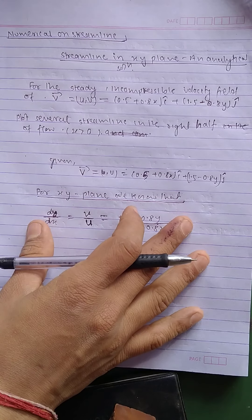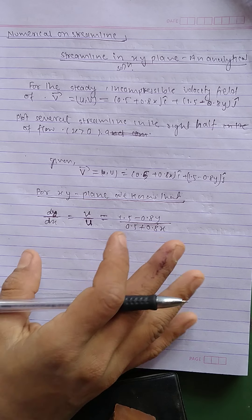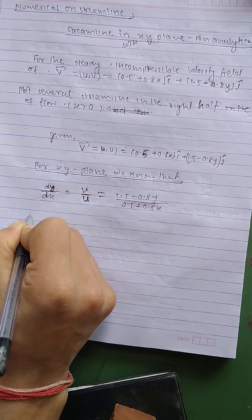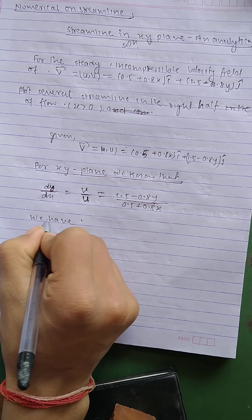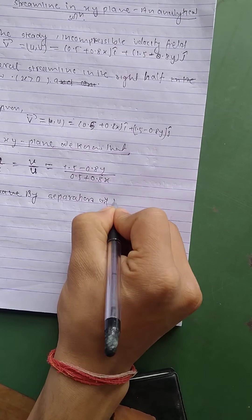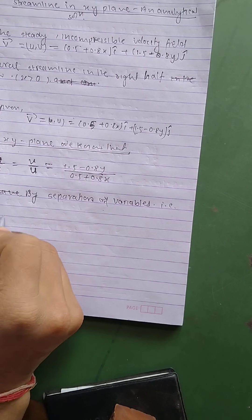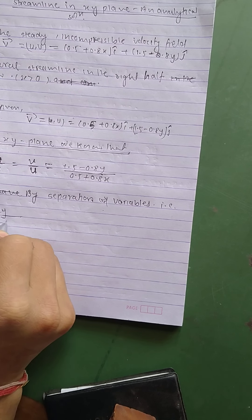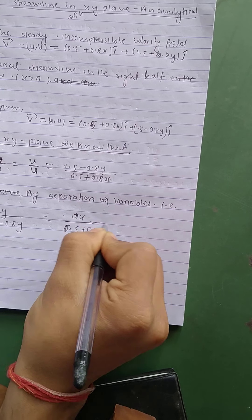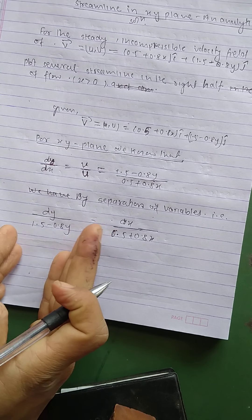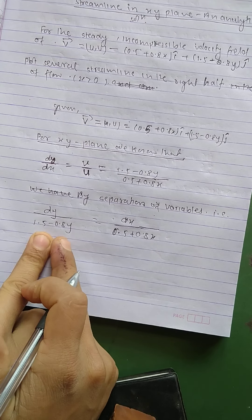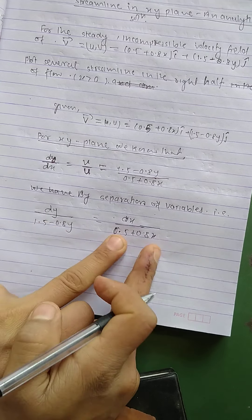Now we solve the differential equation separation by variable. We know that if you don't know the separation by variable, we solve this by separation of variables. That is dy by 1.5 minus 0.8y equals dx by 0.5 plus 0.8x. What is separation by variables? First of all, you have to separate one type of coefficient one side and another type of coefficient on the other side. Here you can distinguish that is separation by variable: y on this side, x on this side.